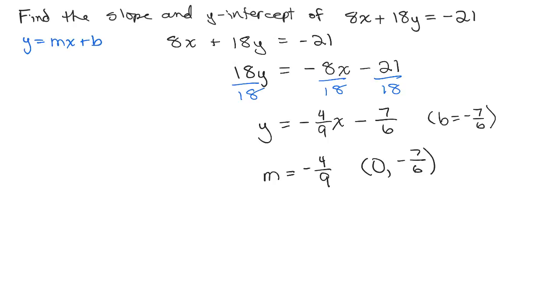Now, if you only wanted to find the y-intercept, you could have done this problem a little bit different. So I could have just started off with 8x plus 18y equals negative 21. And in order to get the y-intercept, remember what we do? We let x equals 0.